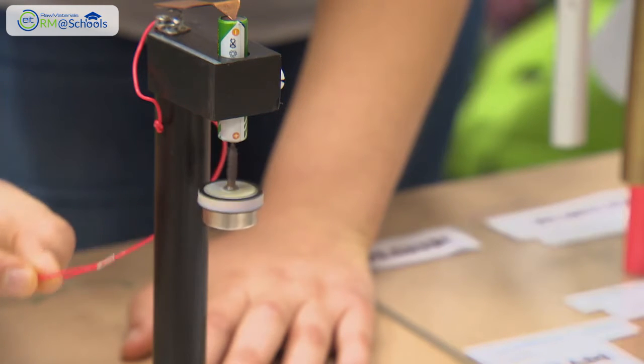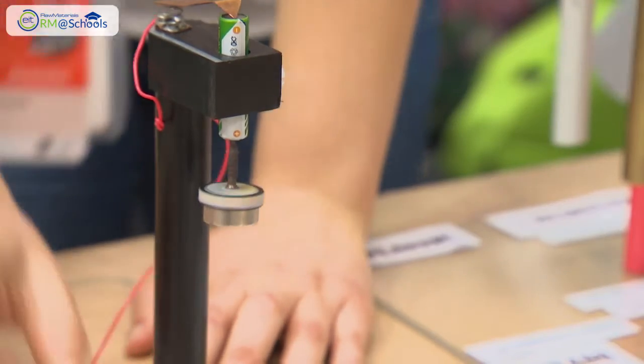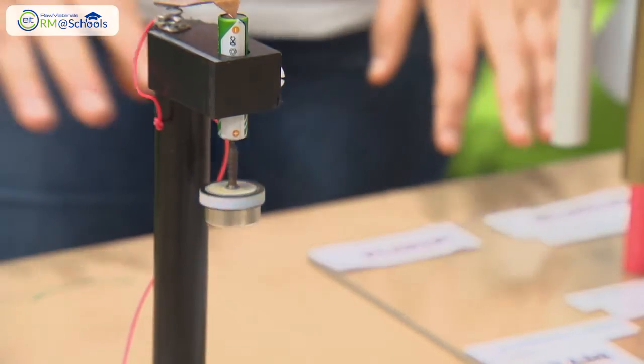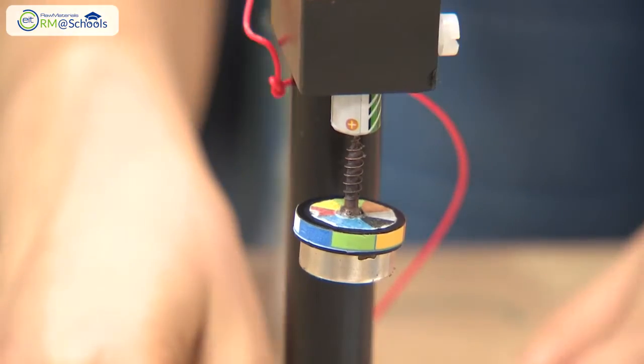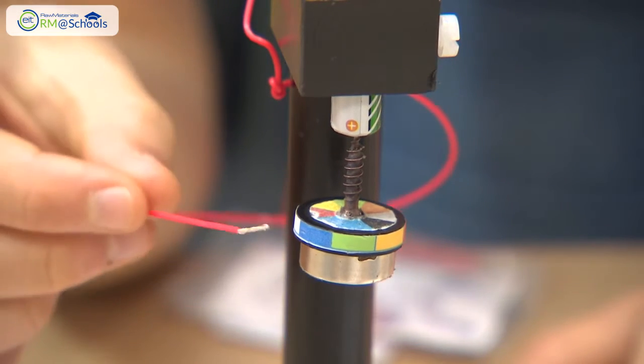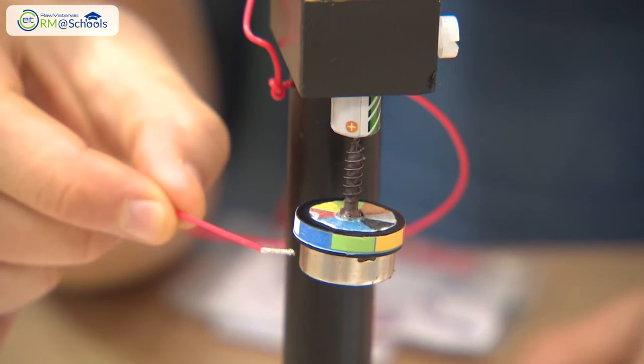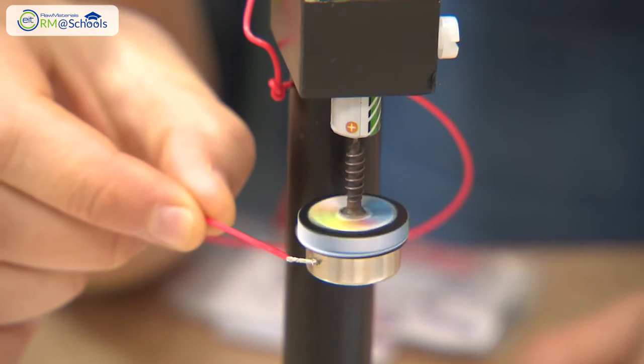It says that anytime we have electrons passing through a magnetic field, these are deflected, so they change their direction and a force starts to act on them.